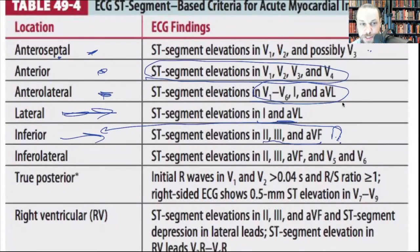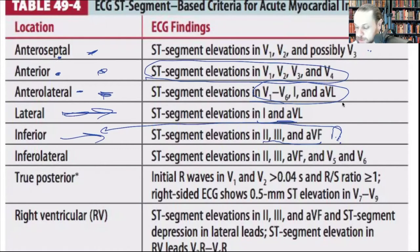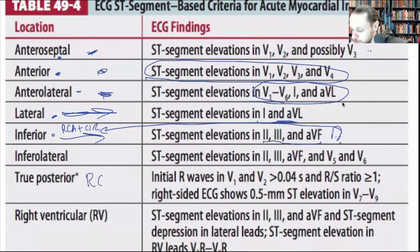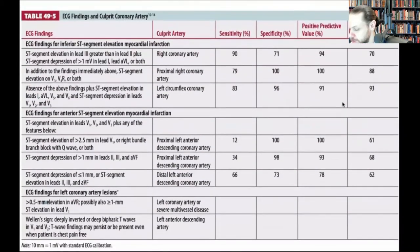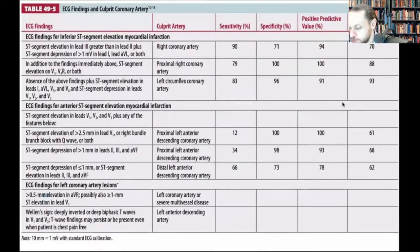Anterior-septal: left anterior descending. Anterior: left anterior descending. Anterior-lateral: circumflex and LAD. Lateral: circumflex. Inferior: right coronary artery plus the circumflex. True posterior: right coronary. Right ventricular: right coronary artery.